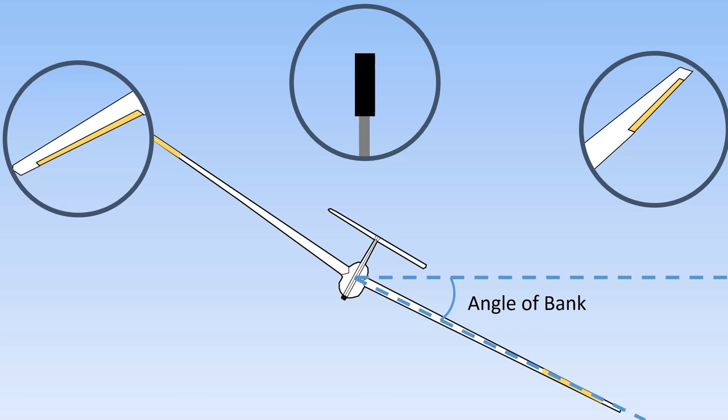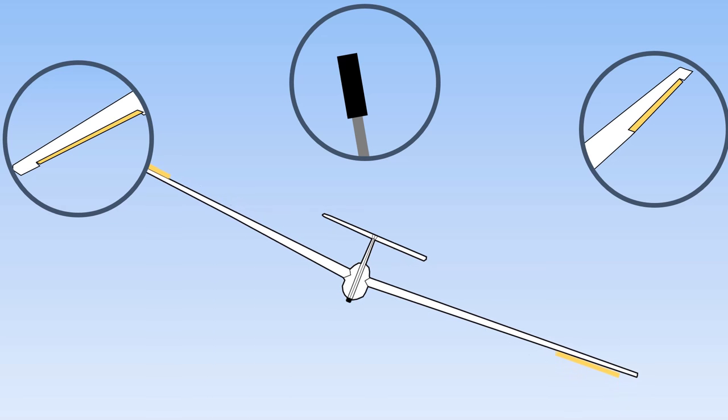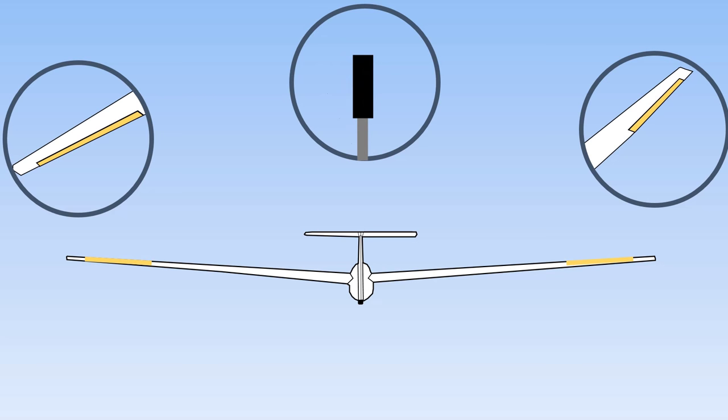As the glider is banked, it will turn. Moving the stick to the left will cause the glider to roll to the left. The further the stick is moved to the left, the faster the glider will roll to the left. Centralising the stick when the wings are level will return the glider to straight flight.